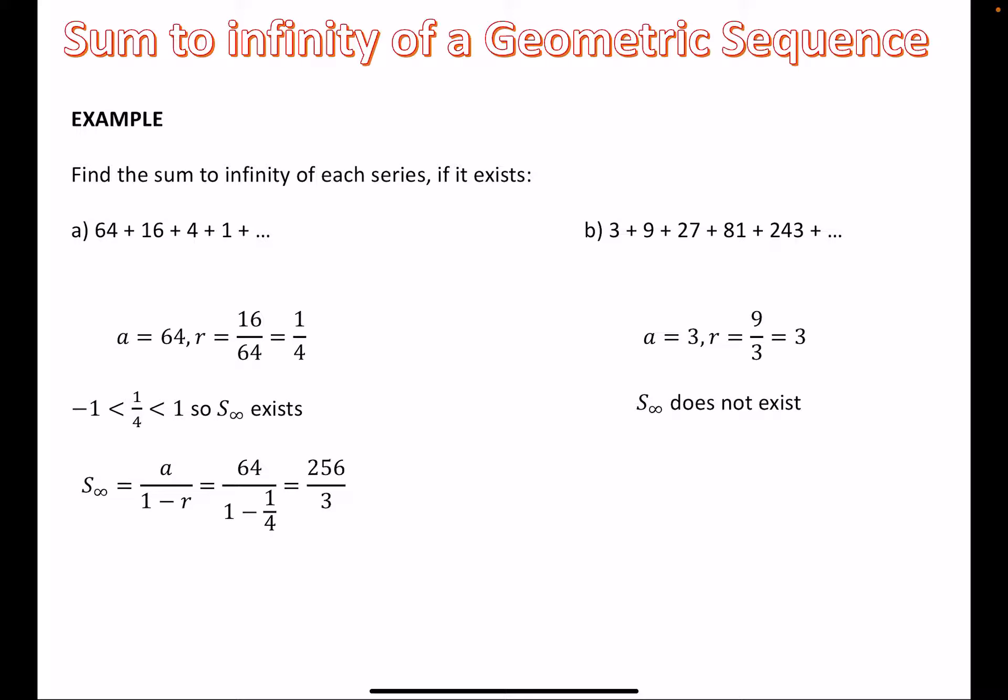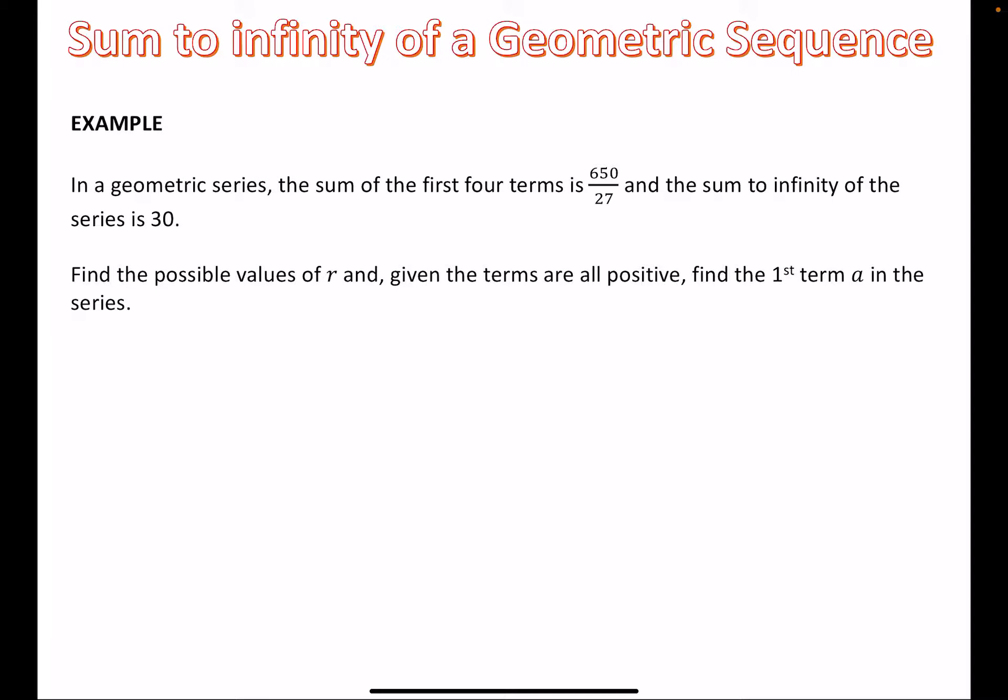And that's pretty much that. However, obviously, you're going to get some awkward questions involving the sum to infinity, as these ones will show. In the geometric series, the sum of the first four terms is 650 over 27, and the sum to infinity of the series is 30. Find the possible values of r, and given the terms are all positive, find the first term a in the series.